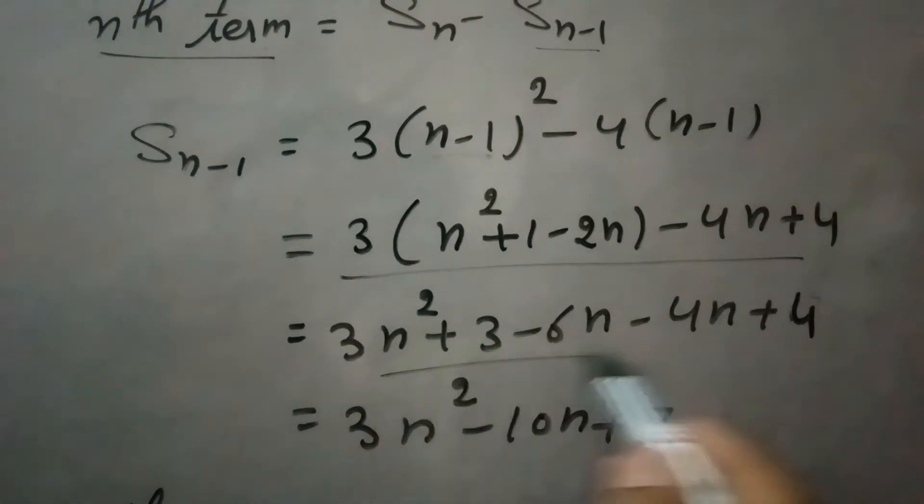After calculating this fully, we will get 3n² minus 10n plus 7. You can see the calculations here.